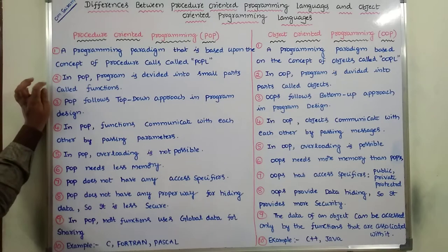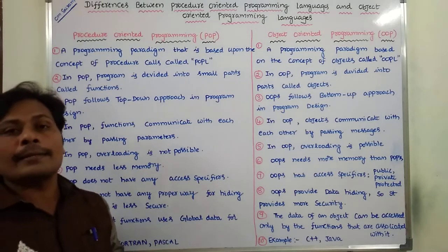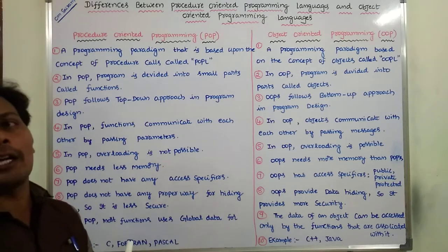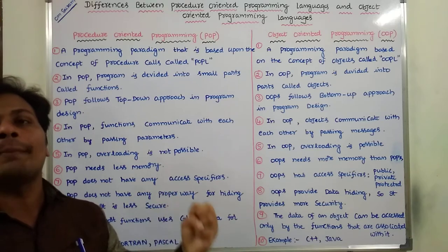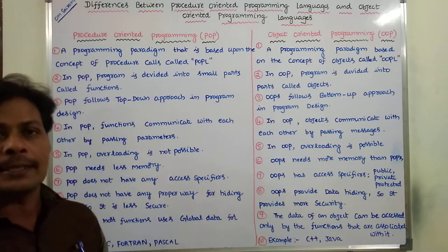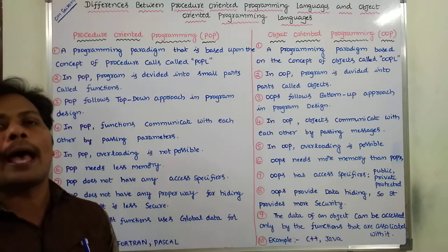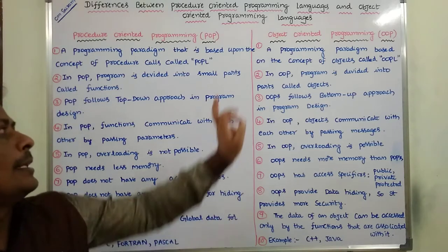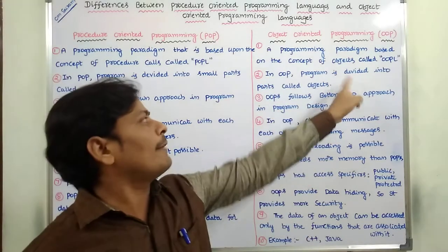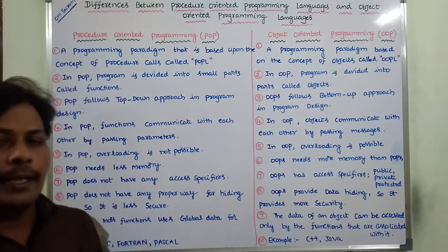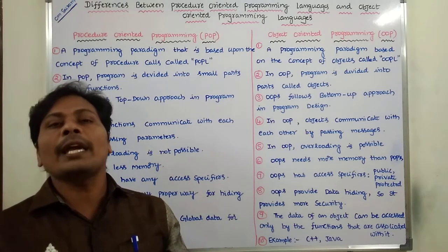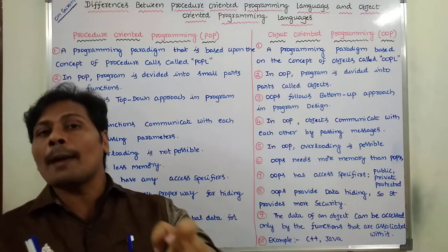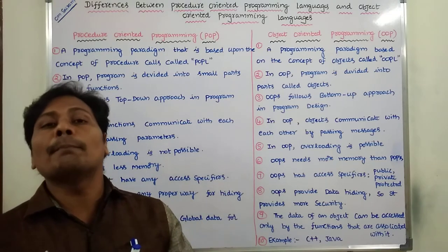The second difference: in POPL, the program is divided into small parts called functions. In Procedure Oriented Programming Language, we divide the total program into several parts, and each part is called a function. In the case of Object Oriented Programming Language, the total program is divided into some number of objects.